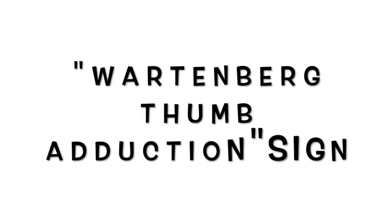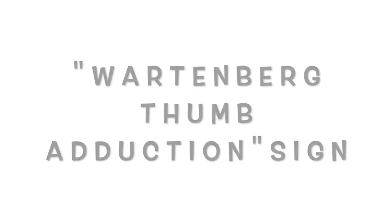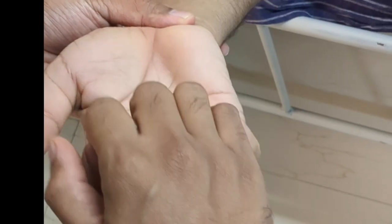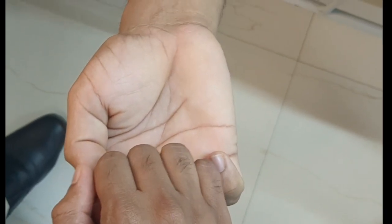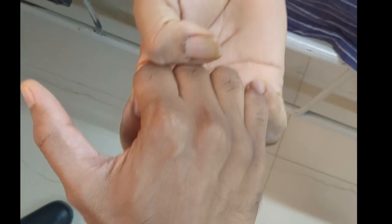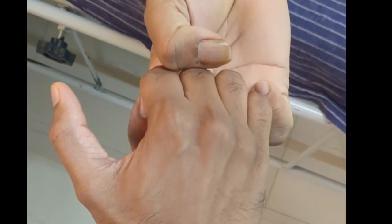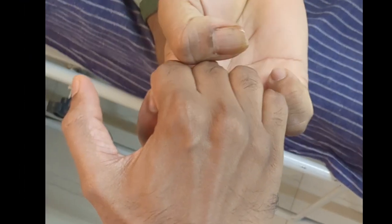Next is Wattenberg thumb adduction sign. Ask the patient to hook the fingers with your fingers and try to pull against him; you also try to pull against the patient. Normally the thumb goes into abduction, whereas in upper motor neuron involvement the thumb goes into adduction. This is called Wattenberg thumb adduction sign.